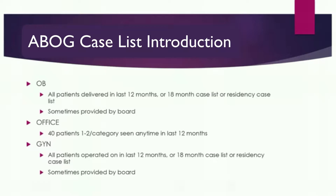What does it mean that the board will provide you a case list? Well, there are certain specialties. Say you do a fellowship in urogynecology and you've been a fellow for three years, and you wait to take your boards until the fourth or fifth year. When you're a certain time frame out, sometimes the residency case list is no longer applicable, and the board will say we will give you an OB case list. If you're a subspecialist and don't practice OB or GYN, you would have to contact the board to get specifics.